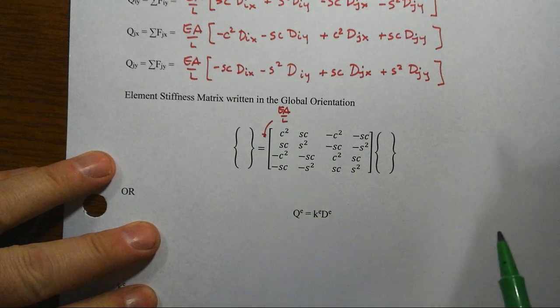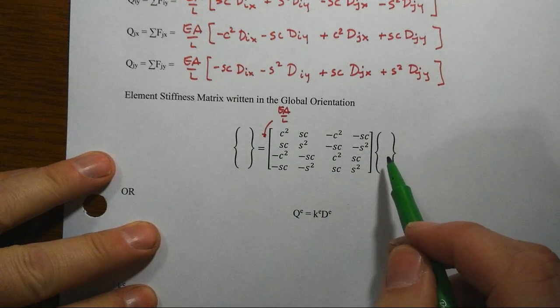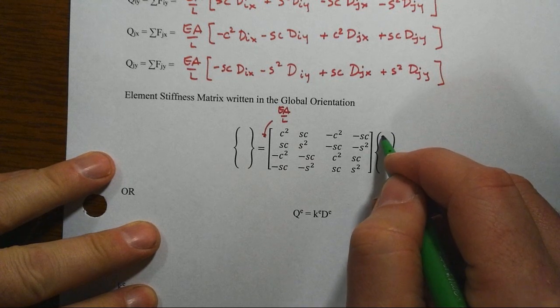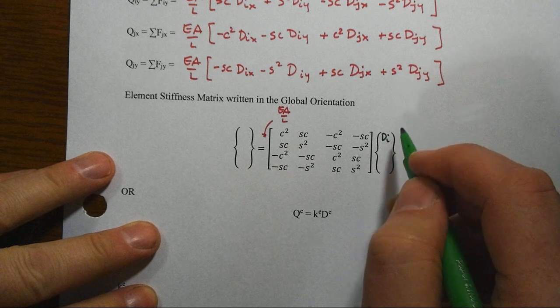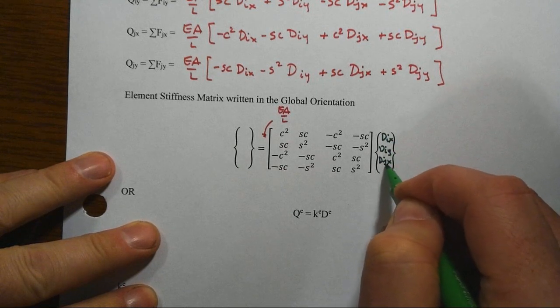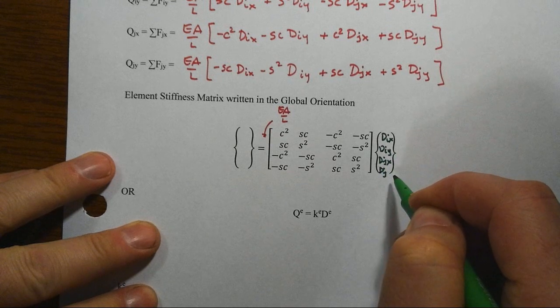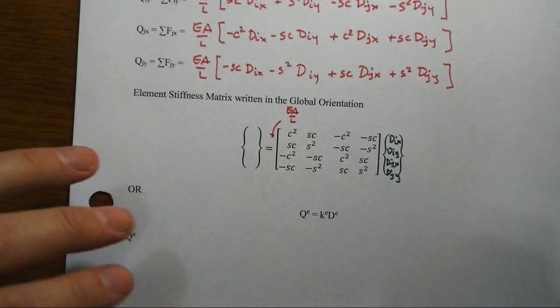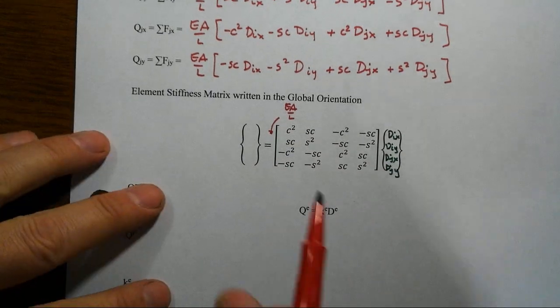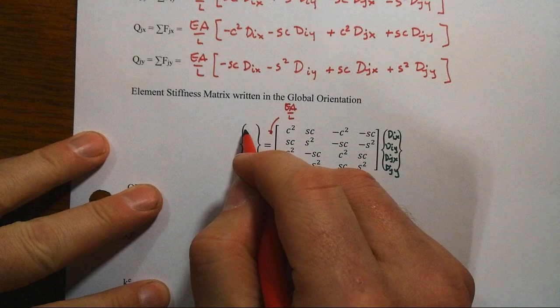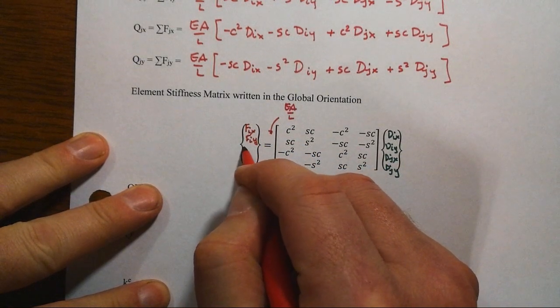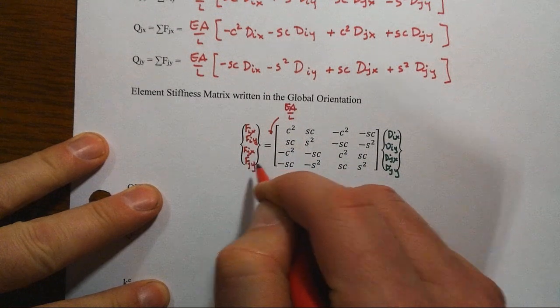You've got the k, basic k, EA over L, axial stiffness sitting out in the front. And you'll have then the global displacements here, DI,X, DI,Y, DJ,X, DJ,Y, going along with then those nodal forces that are happening at the end of the member. So FI,X, FI,Y, FJ,X, and FJ,Y. That gives us this.